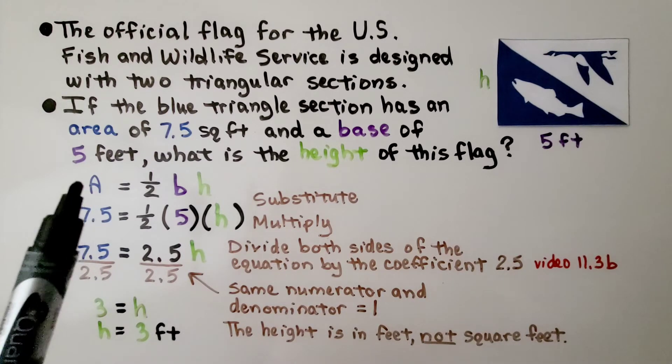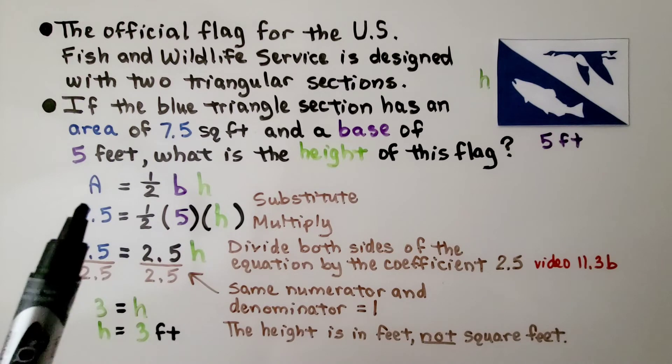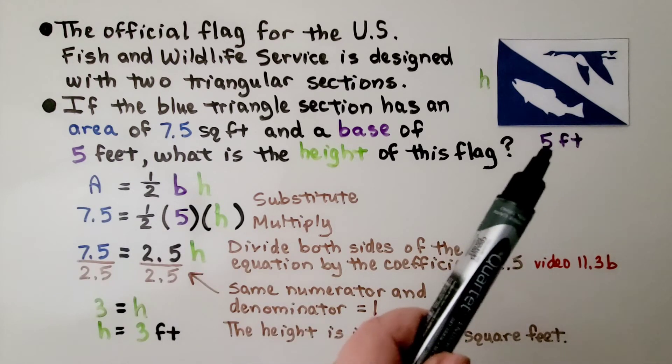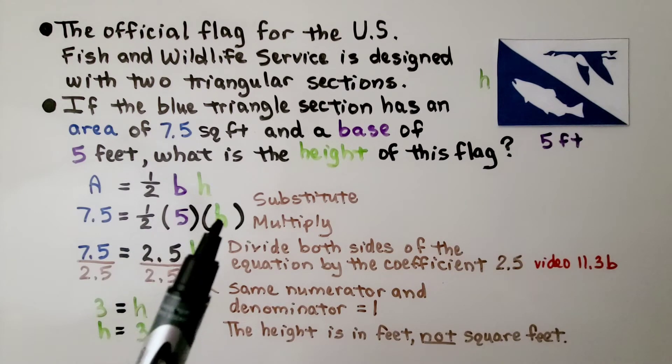We can use the formula for the area of a triangle. We know that the area is 7.5 square feet. We put that here and substitute it in. We know that the base is 5 feet, so we put the 5 here. But we don't know the height, so we have an h.